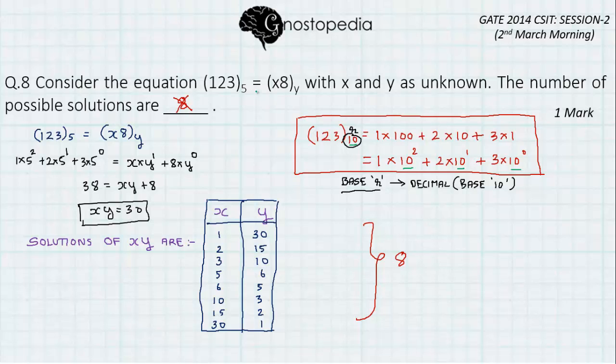Because if you see, if I have a base 5, the numbers can take the value that is the numbers inside this can take the value 0, 1, 2, 3 and 4. Similarly, for y it will go up to 0 to y-1. So, it is common sense to note that y will always be greater than 8.